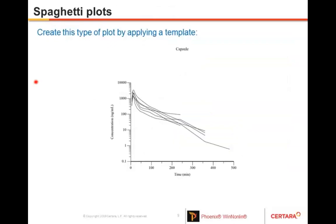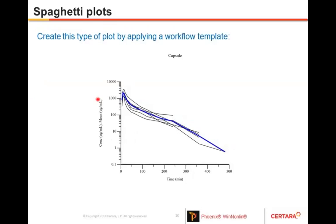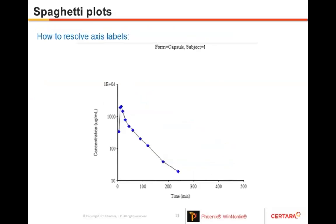I will show you how to create templates like spaghetti plots, where every profile has no markers — just thin lines. I will also show how to use templates to create spaghetti plots that have a mean profile overlaid — a blue mean line. For axis tick marks that appear in exponential form, I will show you a tip to correct these so they display in standard format.